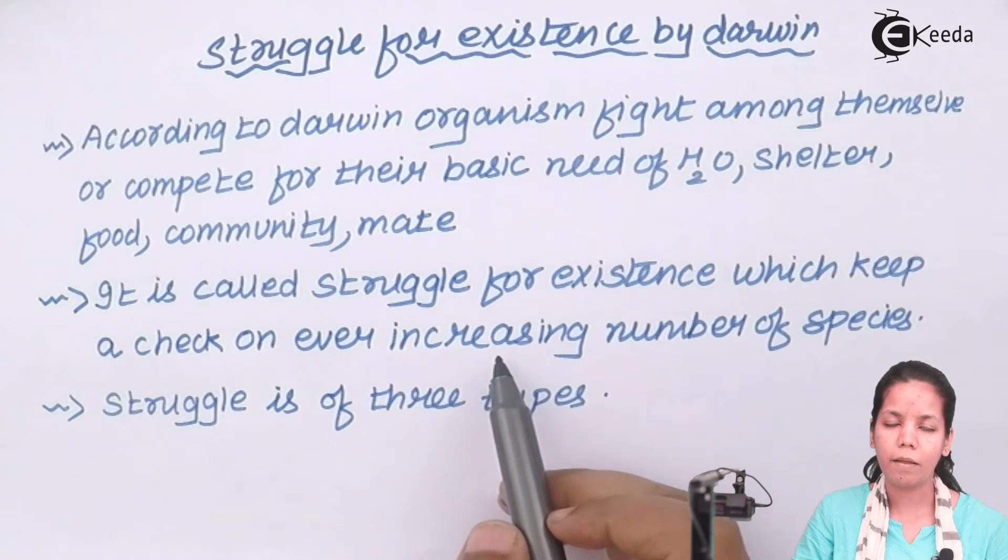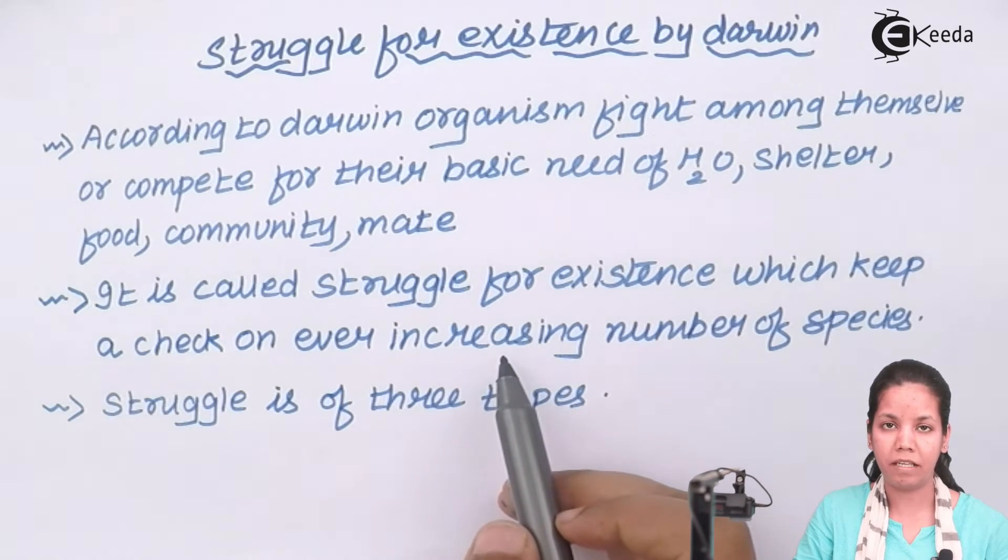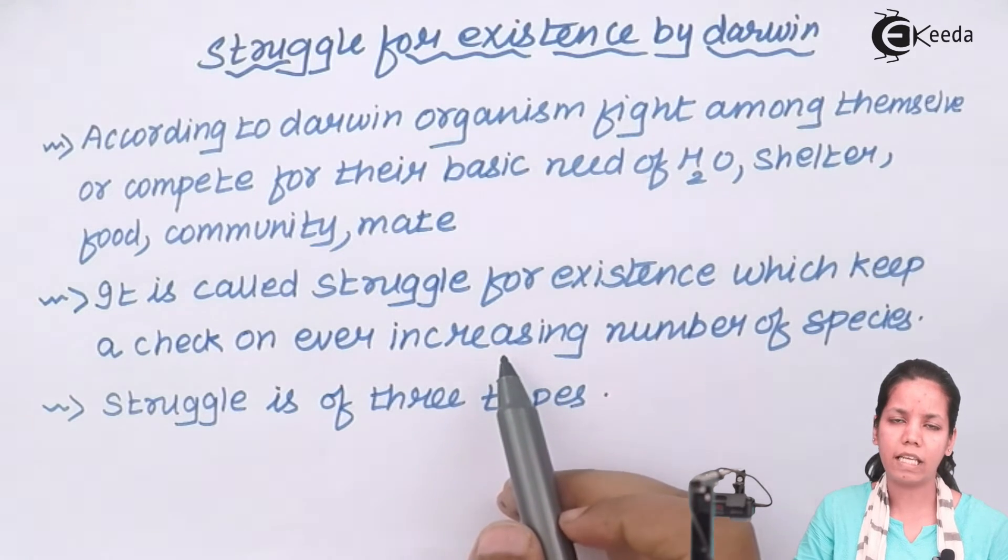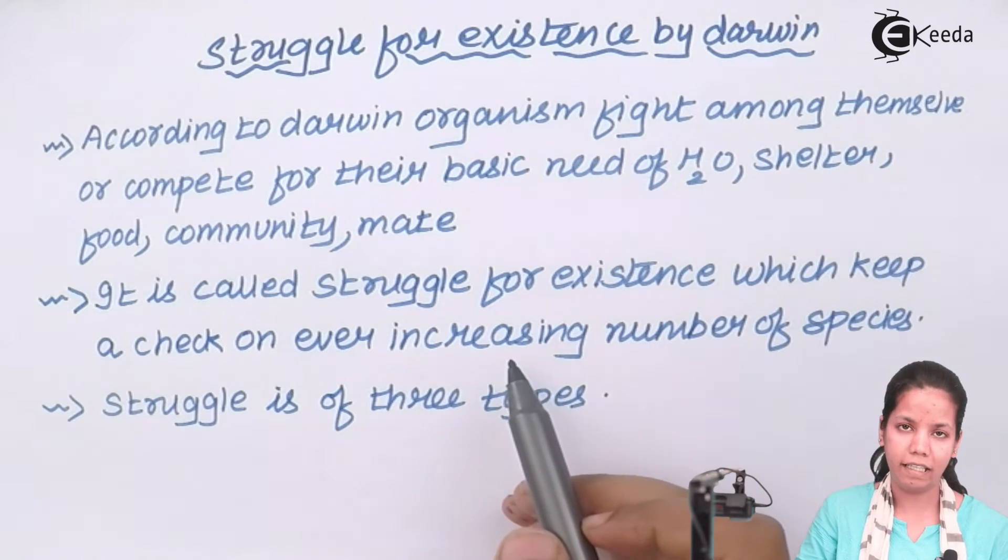Now due to this phenomenon, what happens is that organisms who are fit to fight or the organisms who possess that fighting spirit are going to survive. Whereas those organisms who couldn't fit or survive themselves almost extinct in the ever growing population, and there is always a check in the population due to this. Now struggles are of three different types.